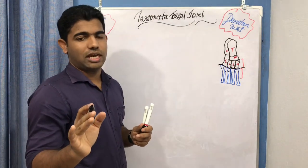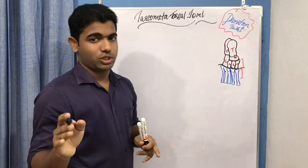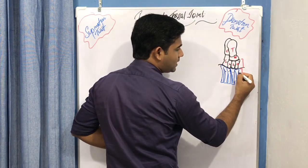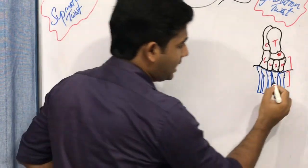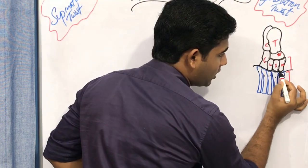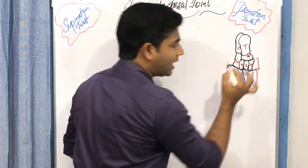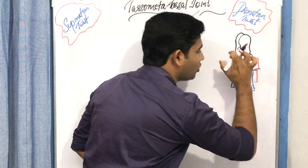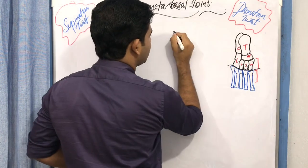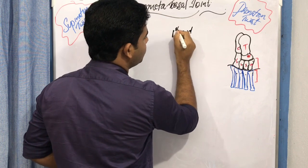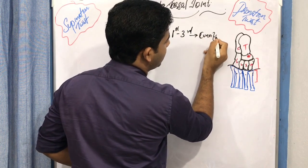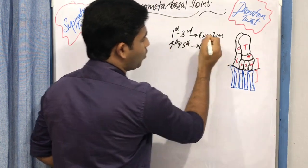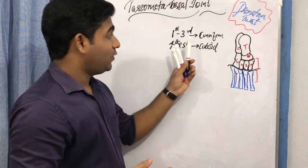If you are watching this for the first time, go back to the tarsometatarsal joint anatomy video on our channel and then come back. The first metatarsal articulates only with the medial cuneiform; the second has slight articulation with the lateral and medial cuneiform as well; the third is exclusively with the lateral cuneiform. The important point: the fourth and fifth metatarsals articulate exclusively with the cuboid bone. So first to third articulate with cuneiform bones; fourth and fifth articulate only with the cuboid.